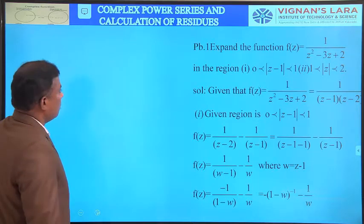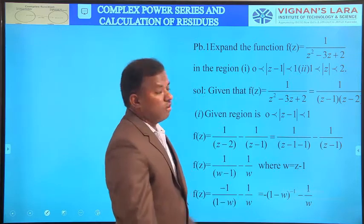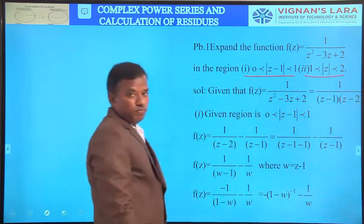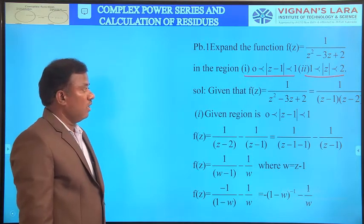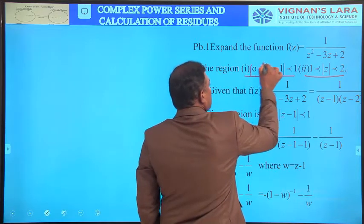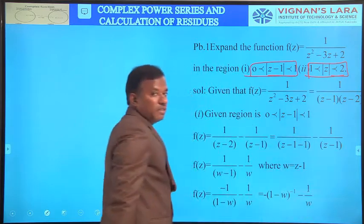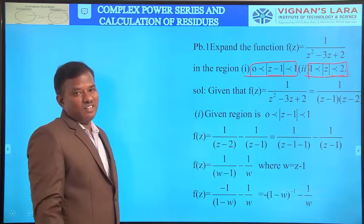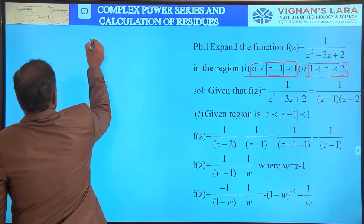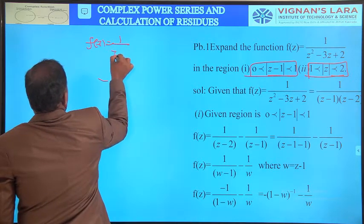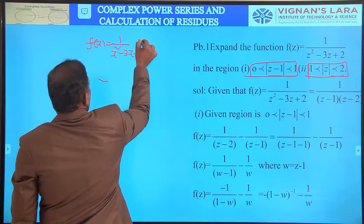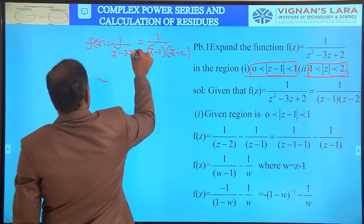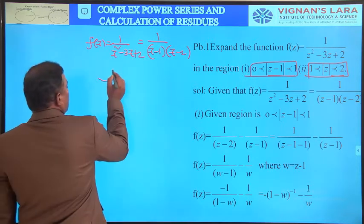Now coming to problems on Laurent series. The first problem: expand f(z) = 1/(z²-3z+2) in the regions (i) 0 < |z-1| < 1 and (ii) 1 < |z| < 2. The region 0 < |z-1| < 1 represents an annular region, giving both positive and negative powers of (z-1). The function is f(z) = 1/[(z-1)(z-2)] since the product is z²-3z+2.